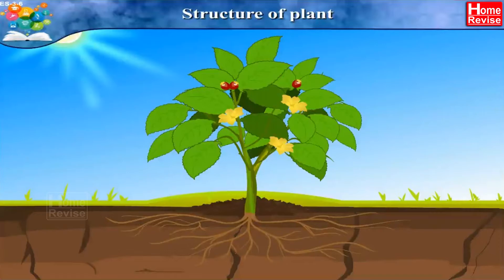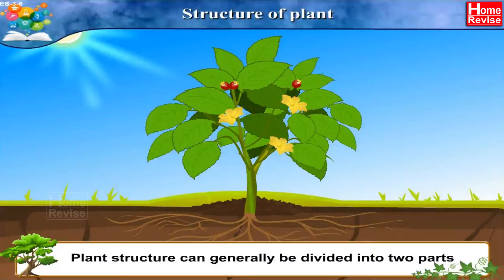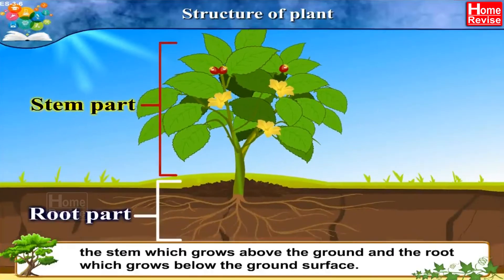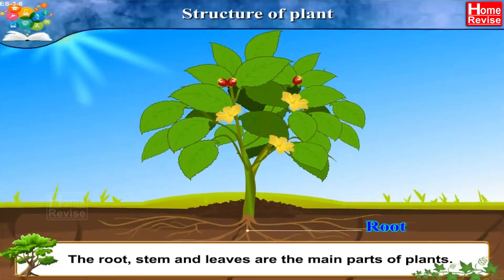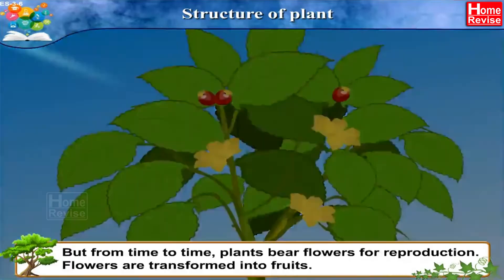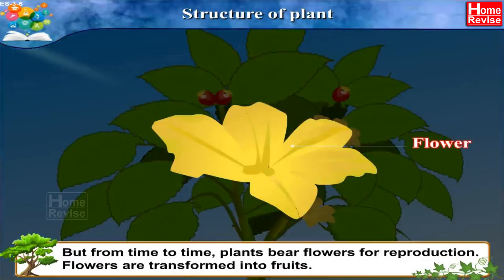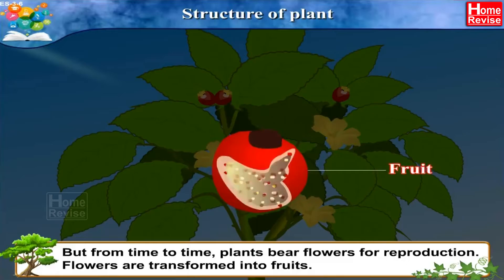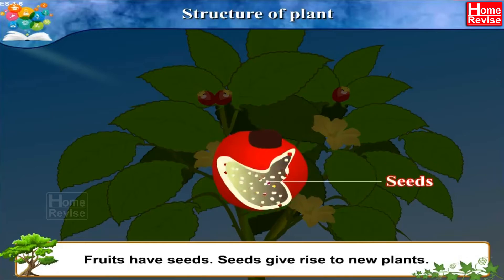The structure of a plant can generally be divided into two parts: the stem, which grows above the ground, and the root, which grows below the ground surface. The root, stem, and leaves are the main parts of plants. From time to time, plants also bear flowers for reproduction. Flowers are transformed into fruits, and fruits have seeds, which give rise to new plants.